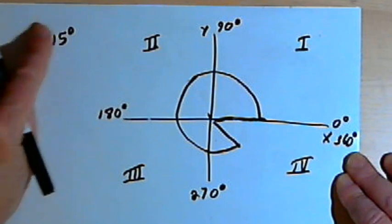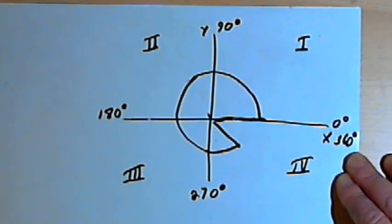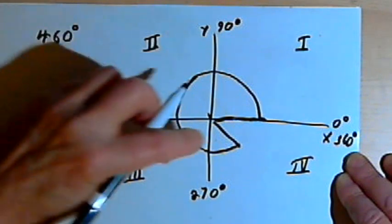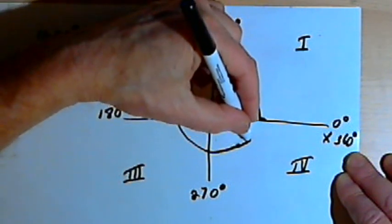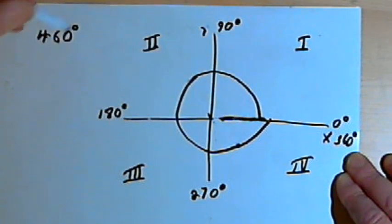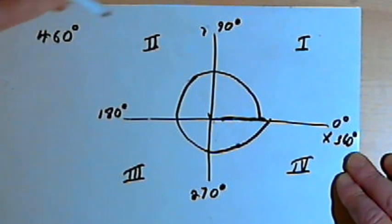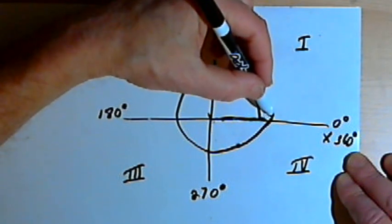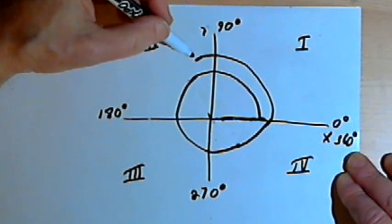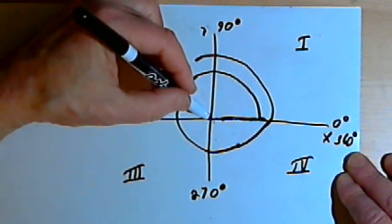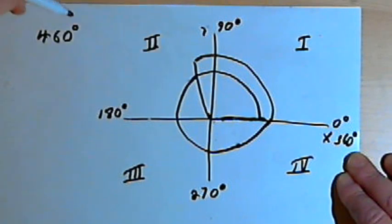We can also go more than 360 degrees. Let's say 460 degrees. We're going to go a full 360 degrees around the origin, and then we need to go 100 degrees more. So we'll go 90 degrees through the first quadrant, and 10 degrees after that into the second quadrant, giving us an angle of 460 degrees.